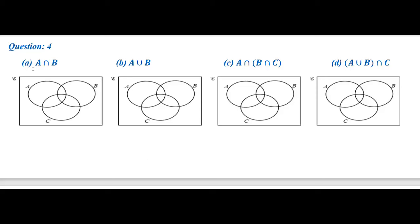This is a question in which 3 sets are involved and we have to shade A intersection B. First we have to identify set A by the tick rule. You can see here the set A is involved in this region, this region, this region, and this region as well.